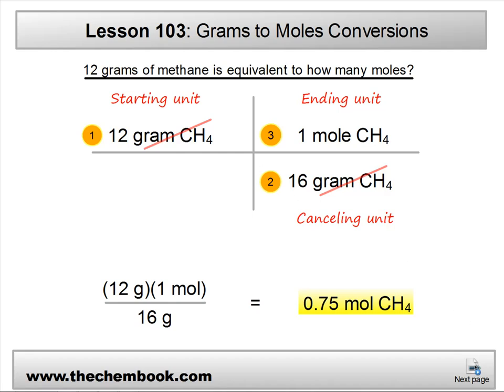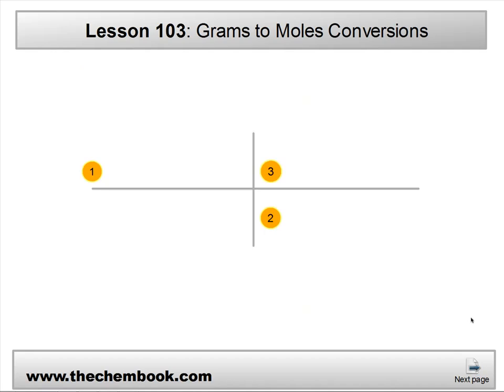Alright, so let's look at a little detail here — let's just look at the grid. Students sometimes have a little issue with the grid itself. So again, we've got positions 1, 2, and 3. Whatever problem you have, your starting unit is in position 1. Position 2 is going to be canceling that starting unit out. And then we have the ending unit.